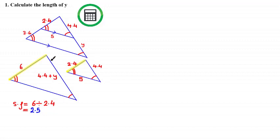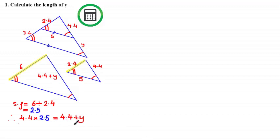Since these two sides are similar, to get from the smaller side to the larger side we multiply 4.4 by the scale factor of 2.5. Therefore 4.4 multiplied by 2.5 equals 4.4 plus Y. This is a calculator question, so 4.4 times 2.5 equals 11, giving us 11 equals 4.4 plus Y. Subtracting 4.4 from both sides, Y equals 6.6 units.